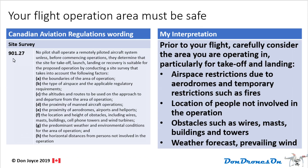The next regulation is 901.27, Site Survey. It essentially says your flight operation area must be safe. Prior to your flight, carefully consider the area you are operating in, particularly for takeoff and landing. Check for airspace restrictions due to aerodromes and temporary restrictions such as fires. Make sure you know the location of people not involved in the operation — bystanders.